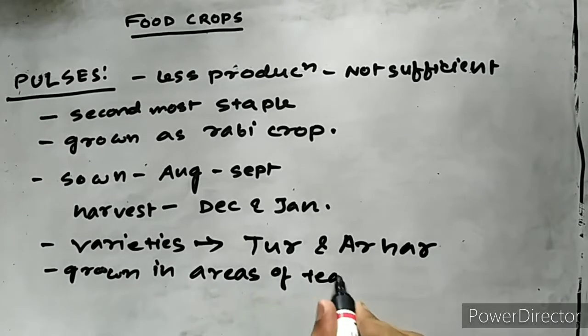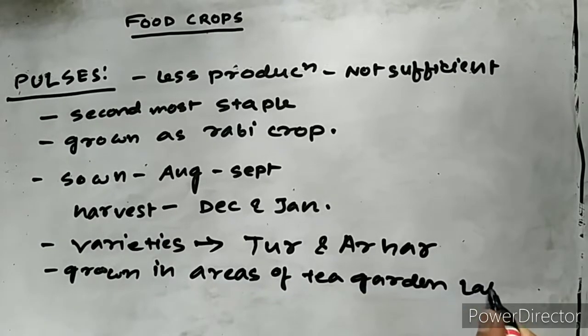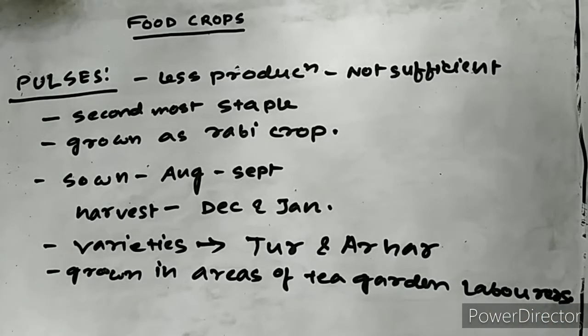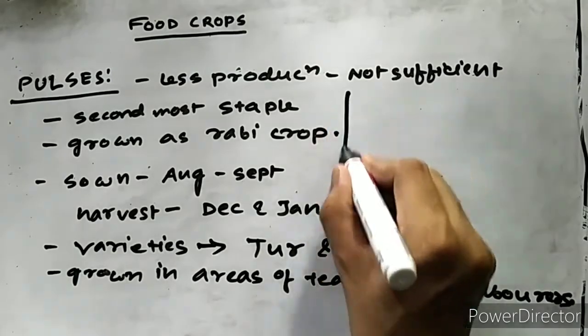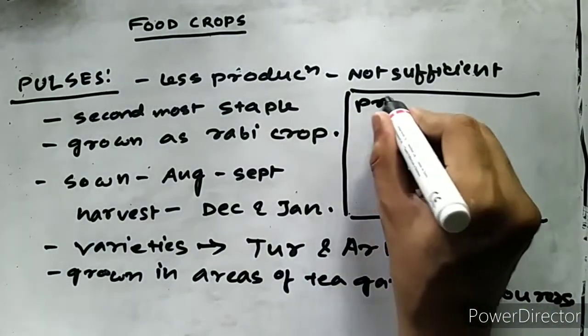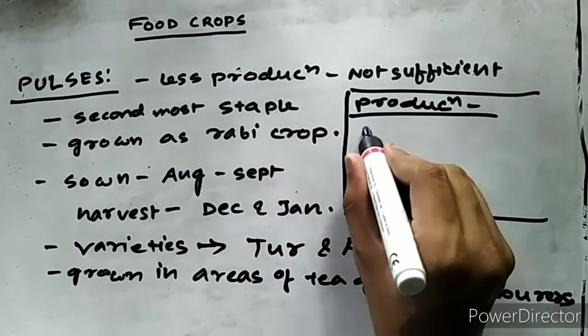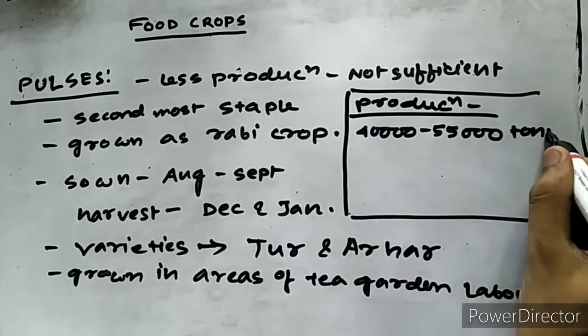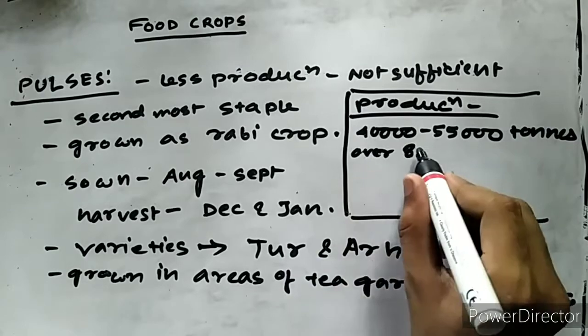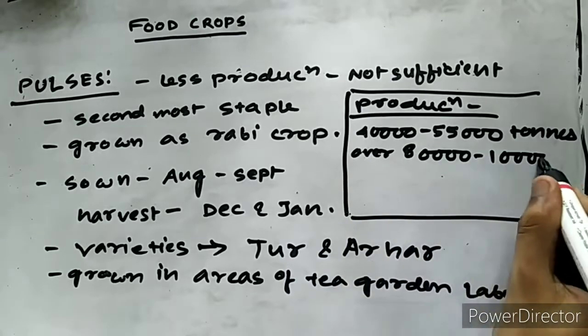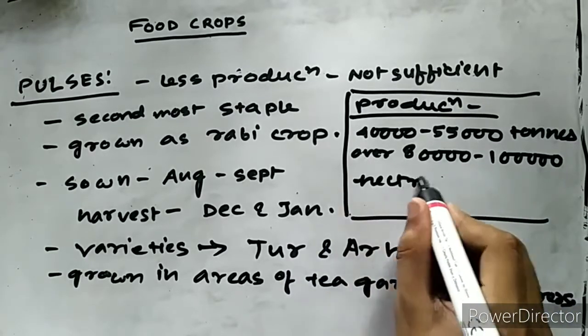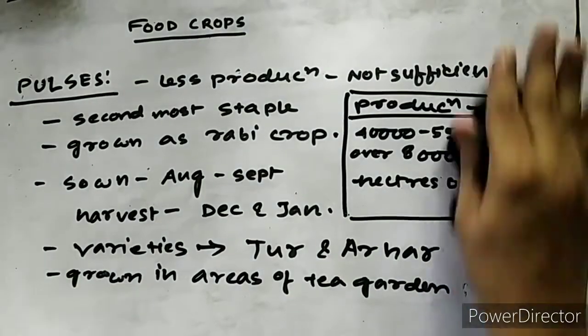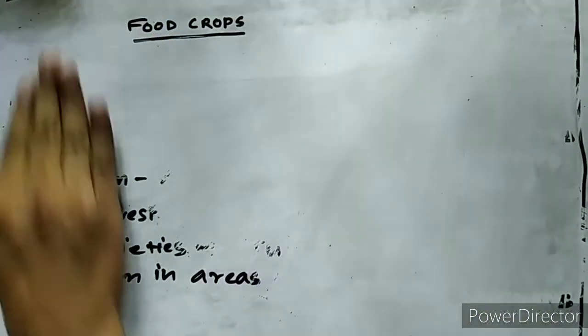Apart from the above varieties, some local varieties of pulses are also grown in Assam. Including all that, Assam produces between 40,000 to 55,000 tons of all pulses over about 80,000 to 1 lakh hectares of land. Thus, from the point of view of production, it can be seen as a minor crop in Assam.